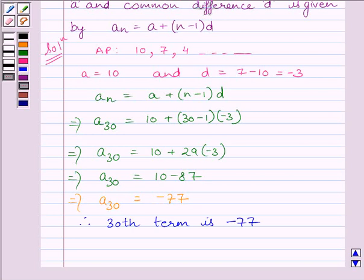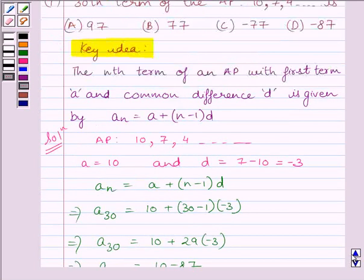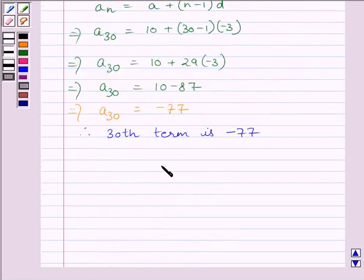So, the 30th term is -77. C is the correct answer.